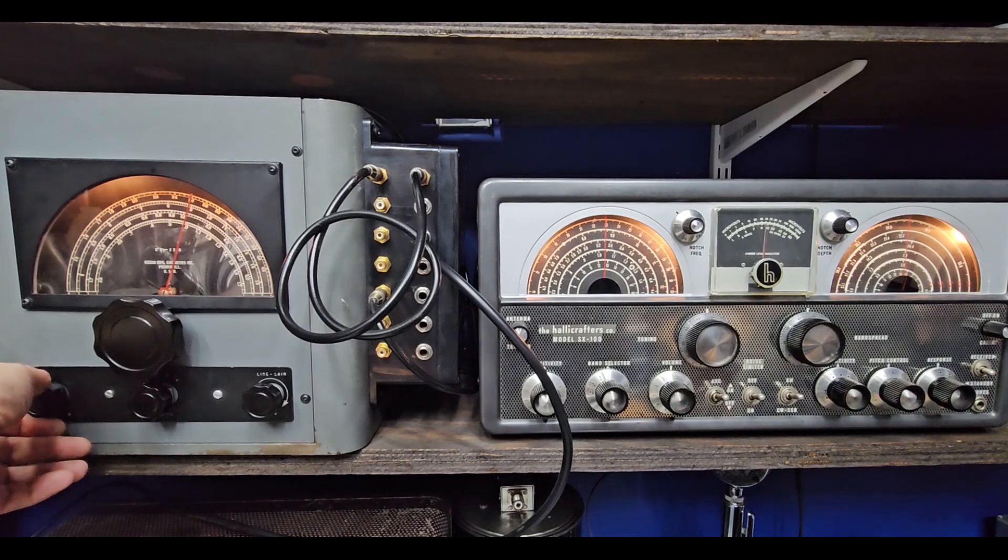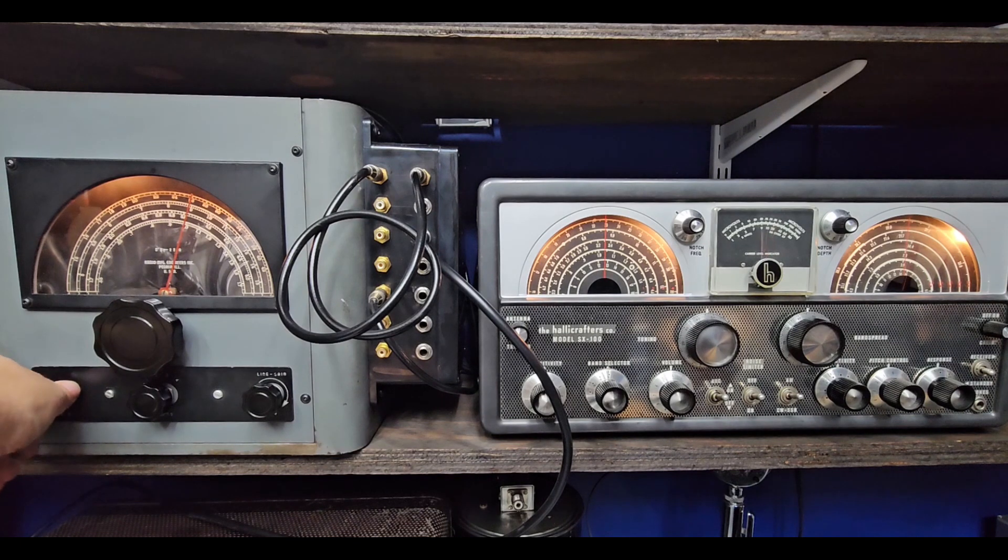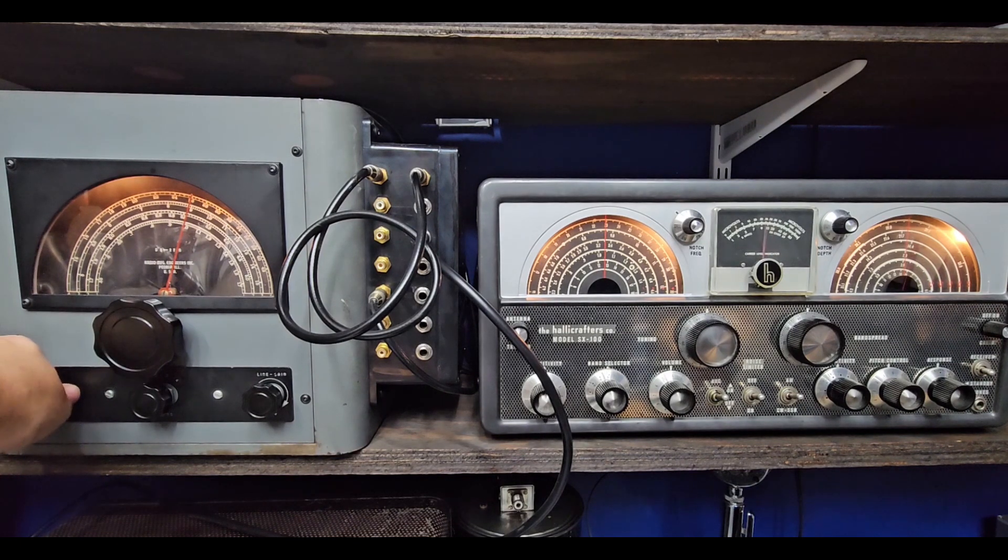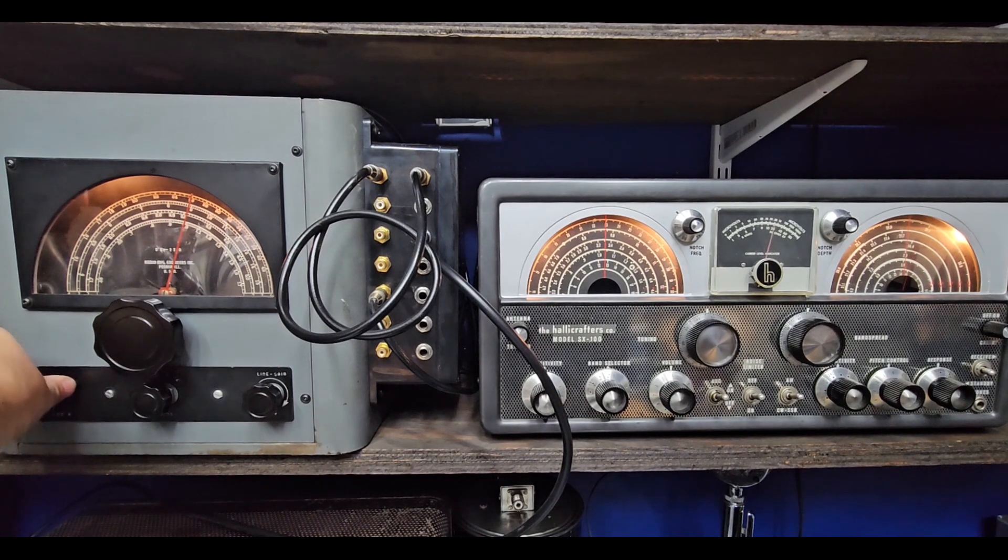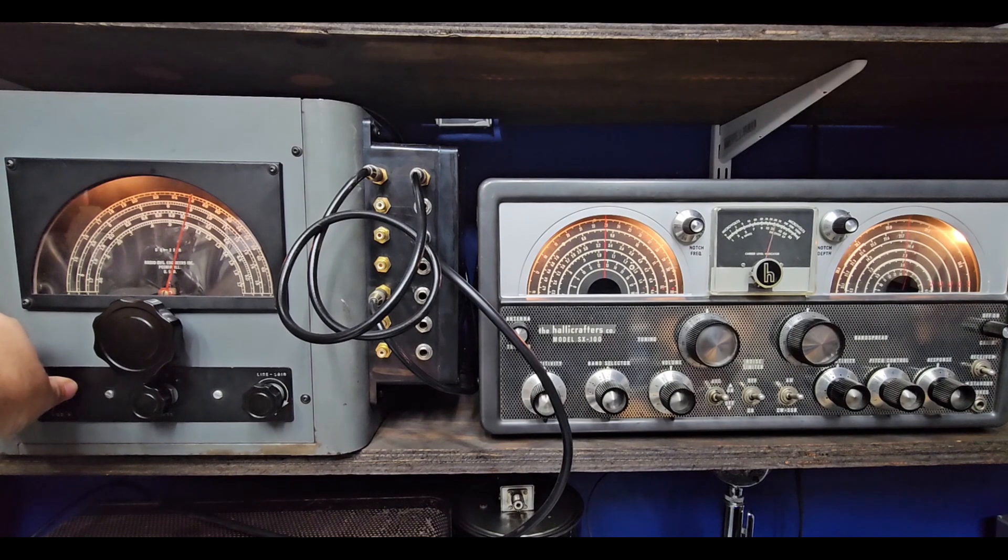We can see the difference in the S-meter. Without it, we're just riding like nine S units, ten over full of noise and barely copyable radio station. When we turn it on, we're now floating over twenty S units. A lot of noise still, but nevertheless, the station is now copyable.